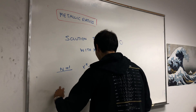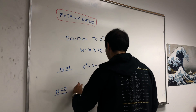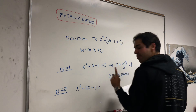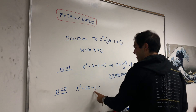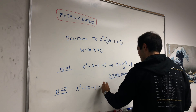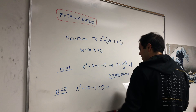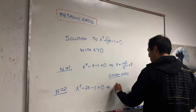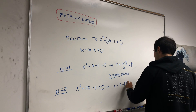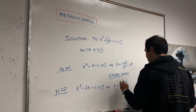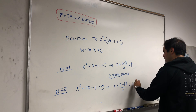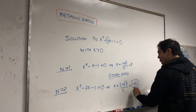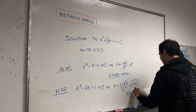Now you may wonder why these are called the metallic ratios. For n equals 2 we get x squared minus 2x minus 1 — careful, minus 1, not plus 1. The discriminant is 8, so x equals 2 plus square root of 8 over 2, which simplifies to 1 plus square root of 2. And that's what's called — guess what — the silver ratio.